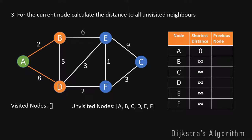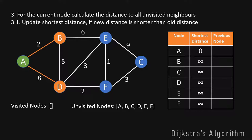We update our table if we have found a new shorter distance to one of the unvisited nodes. B and D are unvisited and their current distance is infinity. So we update the distance from A to B to 2 with previous node A, and we update the distance to D to 8 with previous node A. Our iteration ends here and we mark A as visited, removing it from the unvisited list and adding it to the visited list.